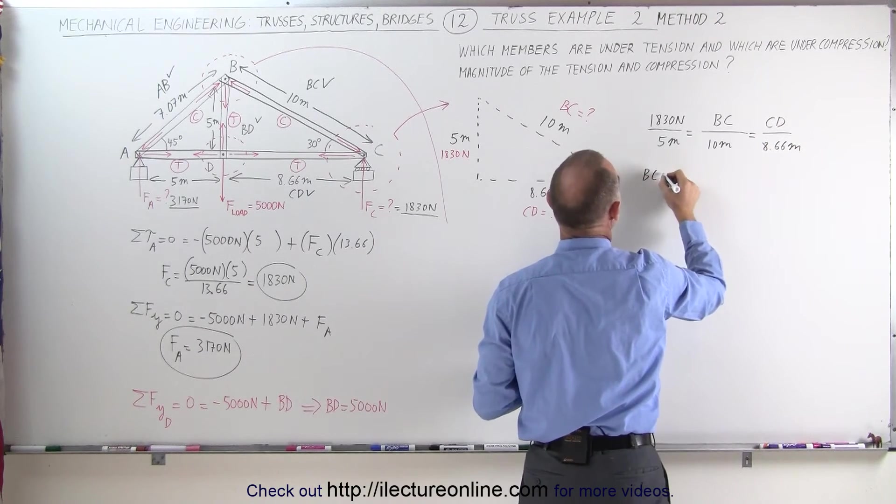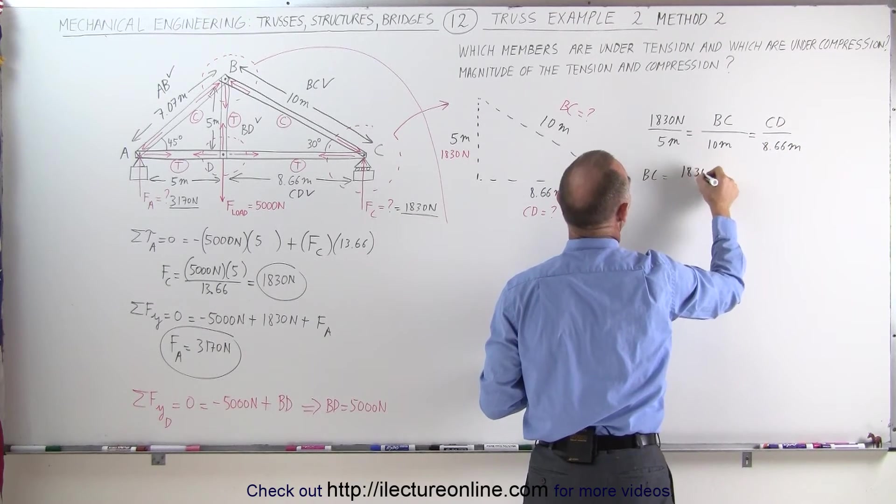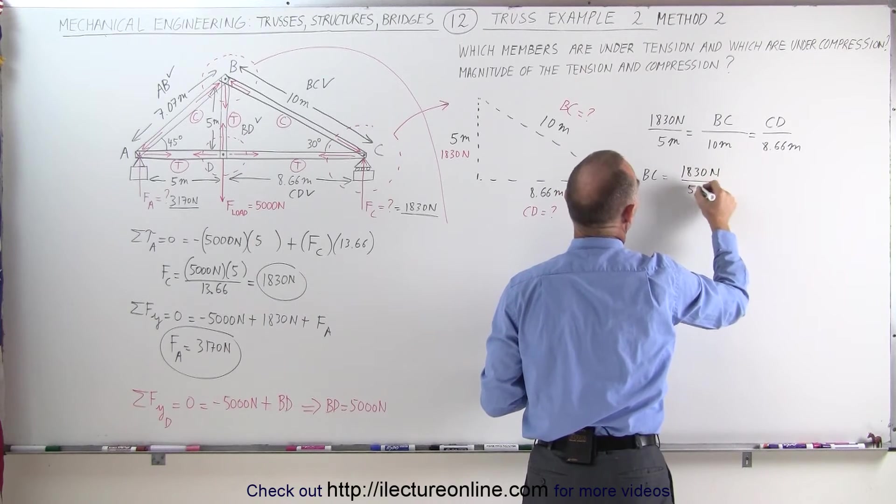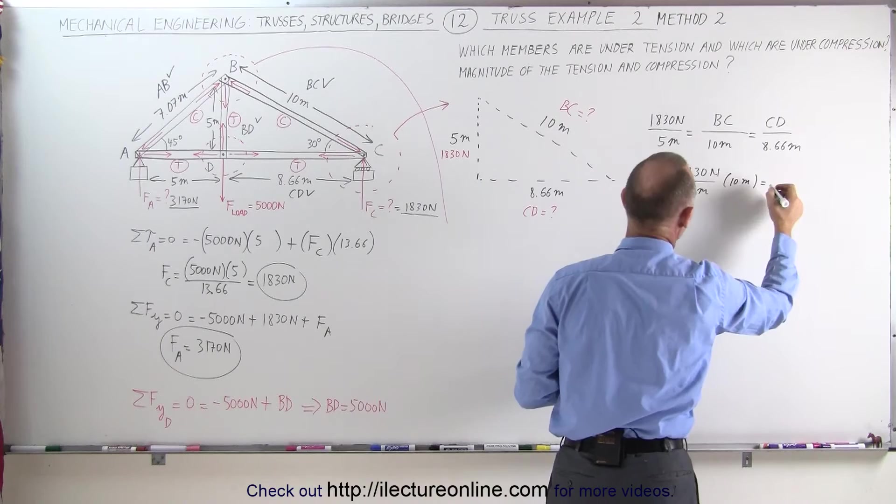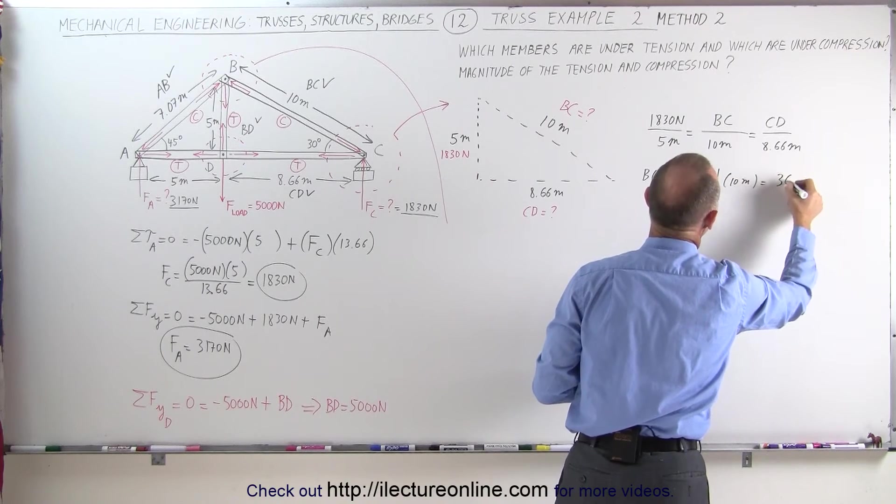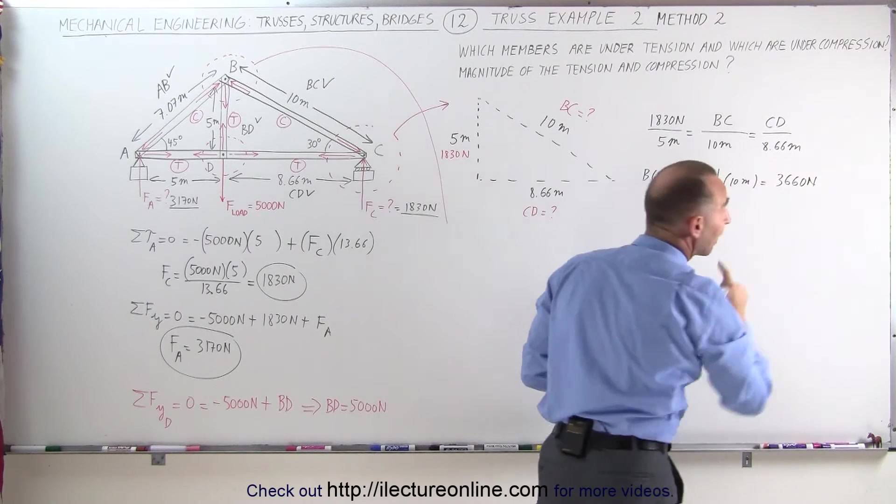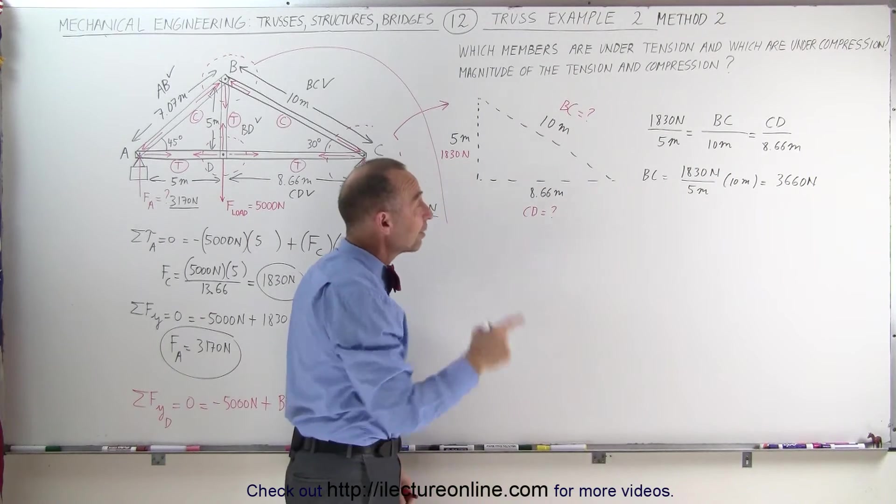Which means that BC is equal to 1830 N divided by 5 meters times 10 meters, which is twice that, 3660 N, which by the way is the same force that we found in the previous video.